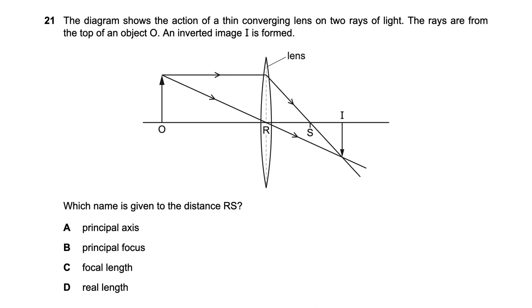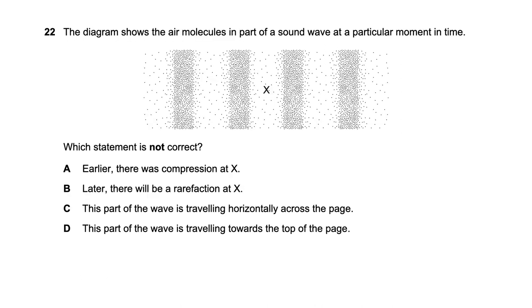Question twenty-one shows a thin converging lens acting on two rays of light, and asks for the name of distance RS. Rays parallel to the principal axis converge at the focal point. The distance between the center of the lens and the focal point is called the focal length. Option C is the right answer.